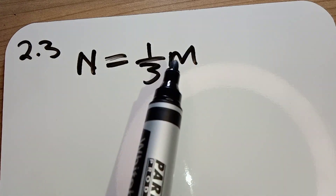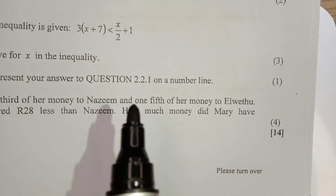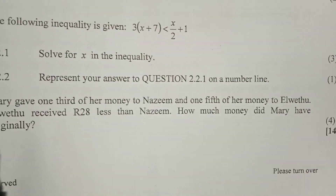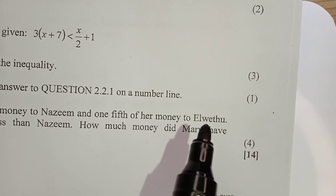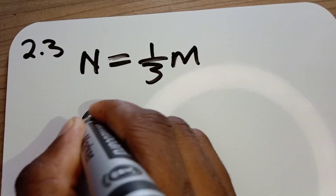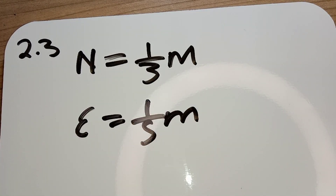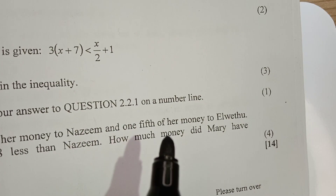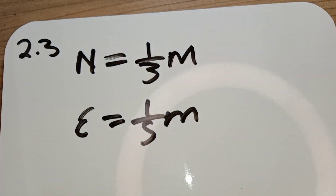It continues to say Mary gives one third of her money to Nazeem and one fifth of her money to Elue Two. We use E for Elue Two. So Elue Two is having one over five of Mary's money.